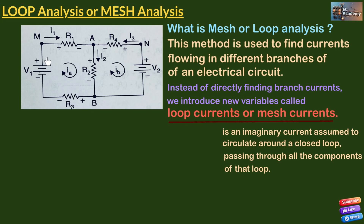Let us look at this circuit. Here we are having two loops. The left loop is M, A, B and back to M, that contains the resistors R1, R2, R3 and a battery V1. We assume two loop currents: IA which is flowing in the left loop in clockwise direction, and IB which is flowing in the right loop in clockwise direction. So both loop currents are assumed to be flowing in clockwise direction.